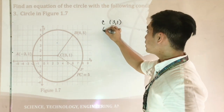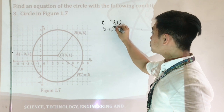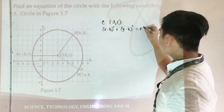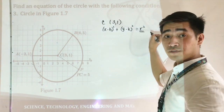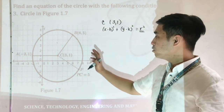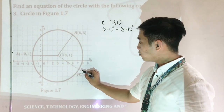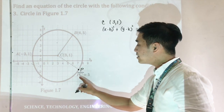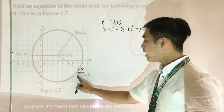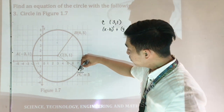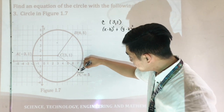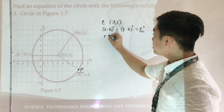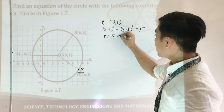The formula that we will be using is X minus H quantity squared plus Y minus K quantity squared is equal to R squared. But then, do we have the value of the radius? Look at the graph again. We could see that we are given point T, and we are given the line segment PC, which is equal to 5 units. From point P up to C, this line segment states that it is equal to 5 units. Therefore, the radius is equal to 5 units.